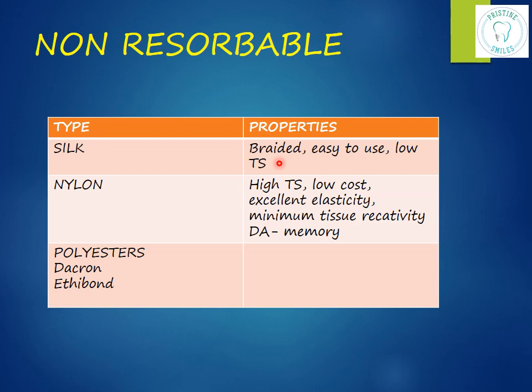Silk sutures are black in color, making them easier to see. When cut, the ends are flat and not pointed, so they cause minimal discomfort to the tongue. Nylon is a synthetic non-resorbable suture with very high tensile strength, low cost, excellent elasticity, and minimal tissue reactivity. Its disadvantage is prominent memory — it may require subsequently more knots to hold it in place. It can be soaked in alcohol to reduce memory and increase pliability.